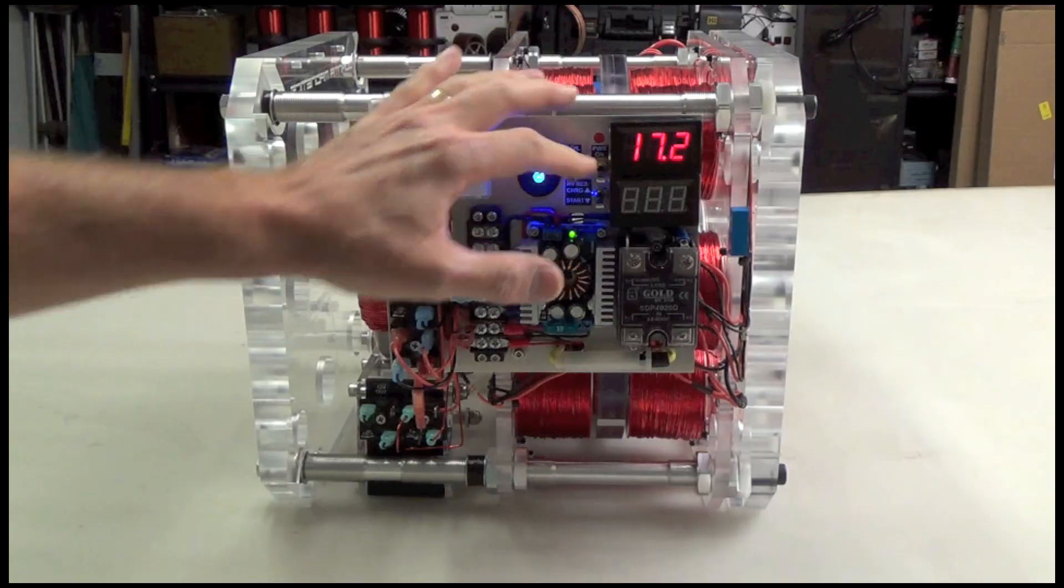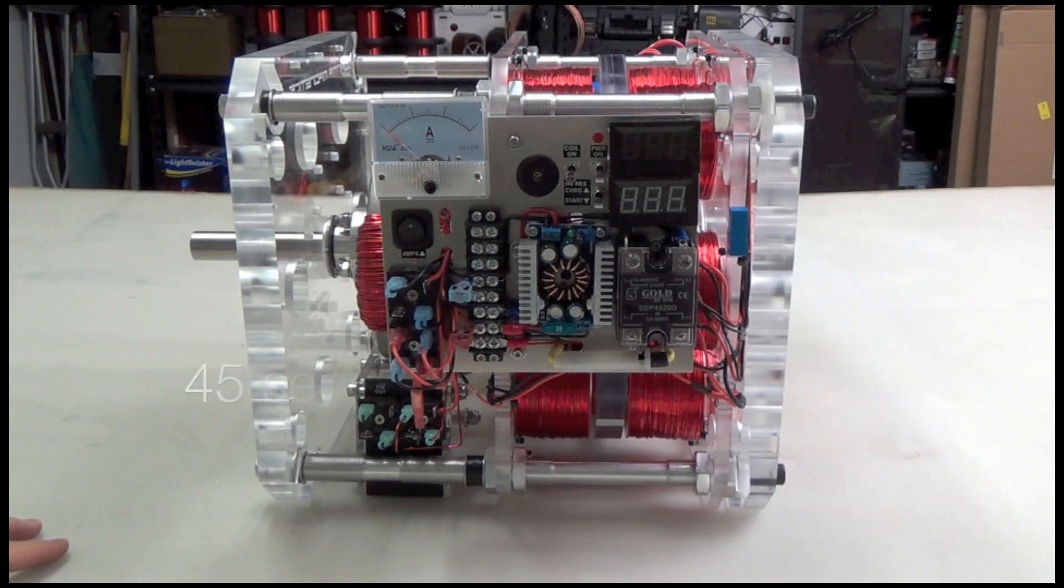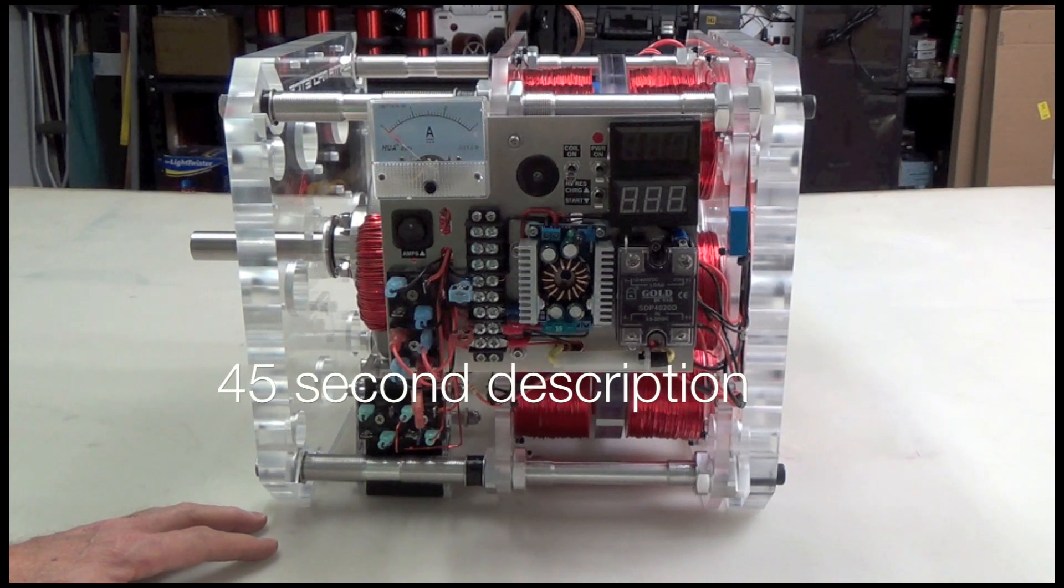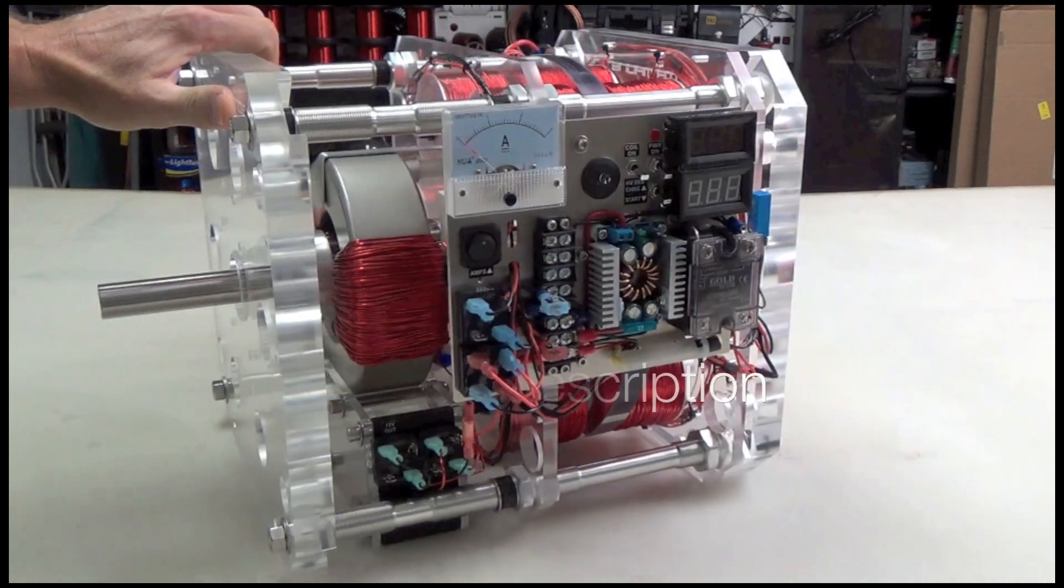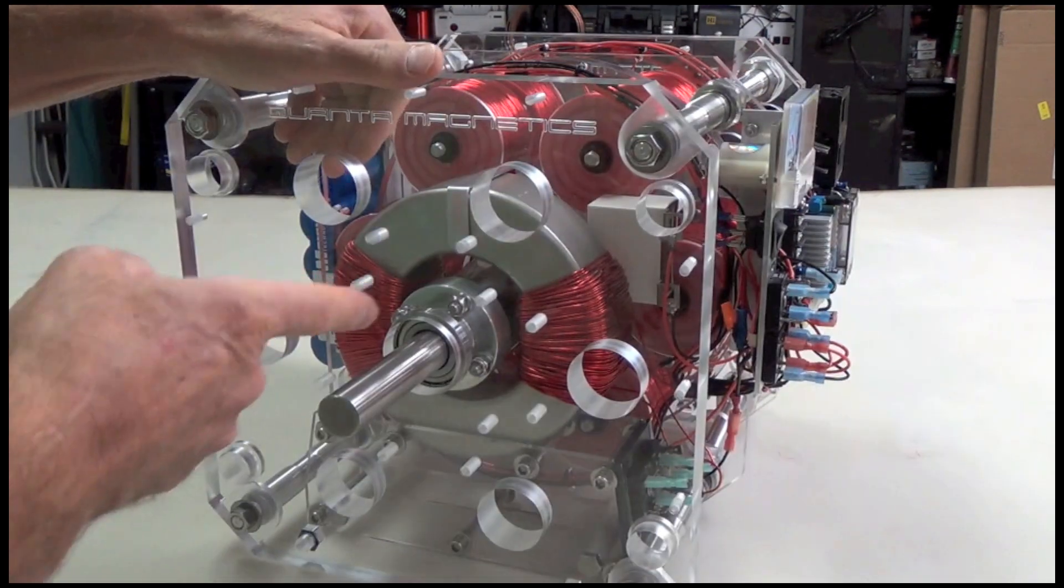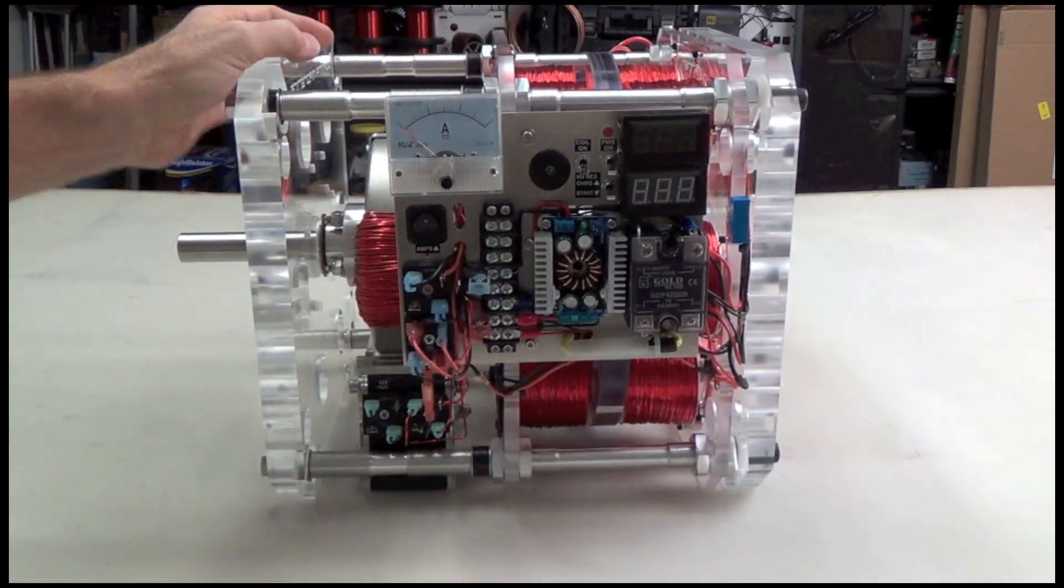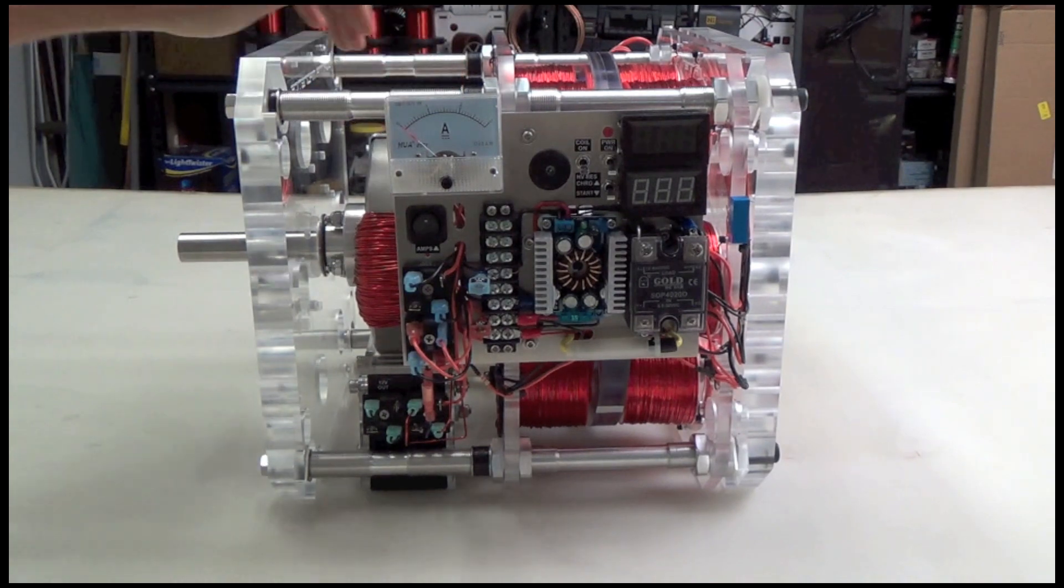I suppose if I was going to call this machine by a new name, I'd probably call it a T1X. T1 obviously because it's got one toroid, and X just because it's an extension of the T2.